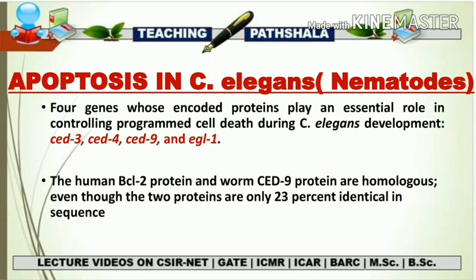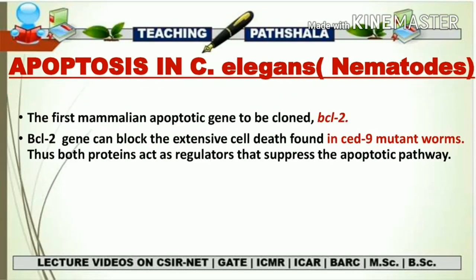The human BCL2 protein and the worm CED9 protein are considered homologous proteins because they mainly share only 23% of identical sequence, but they are still considered homologous proteins. The first mammalian apoptotic gene that was cloned is the BCL2 gene.